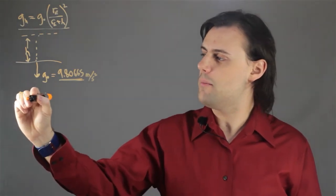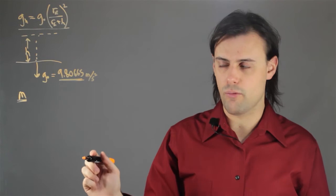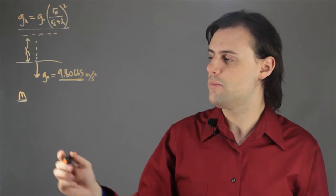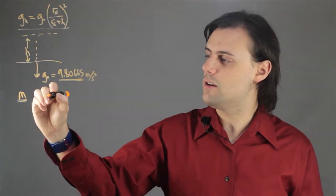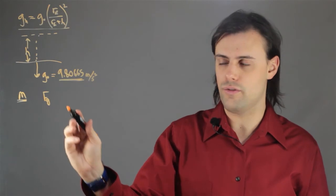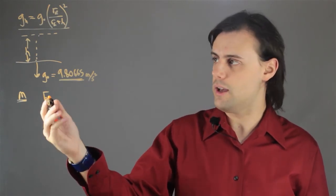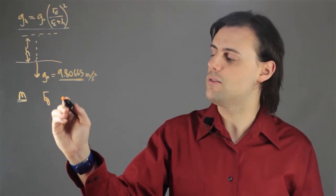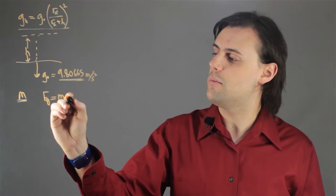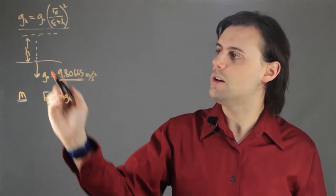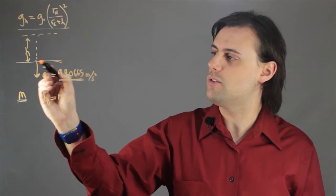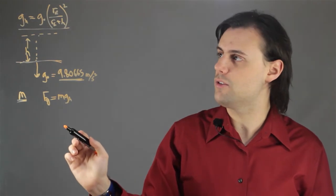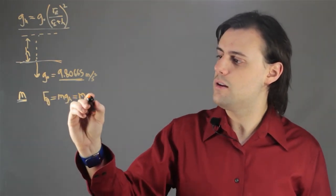So the mass, m, remains the same regardless of where you are in the universe, but your weight is actually in units of newtons or force. So in this case, your weight is the value of the gravitational force felt by you or any other object with mass due to the attraction of the mass of the earth. And it's given as m times g(h). But in this case, h is equal to zero since we're at sea level, and that's what this equation is defined with respect to. So this just becomes m times g0.